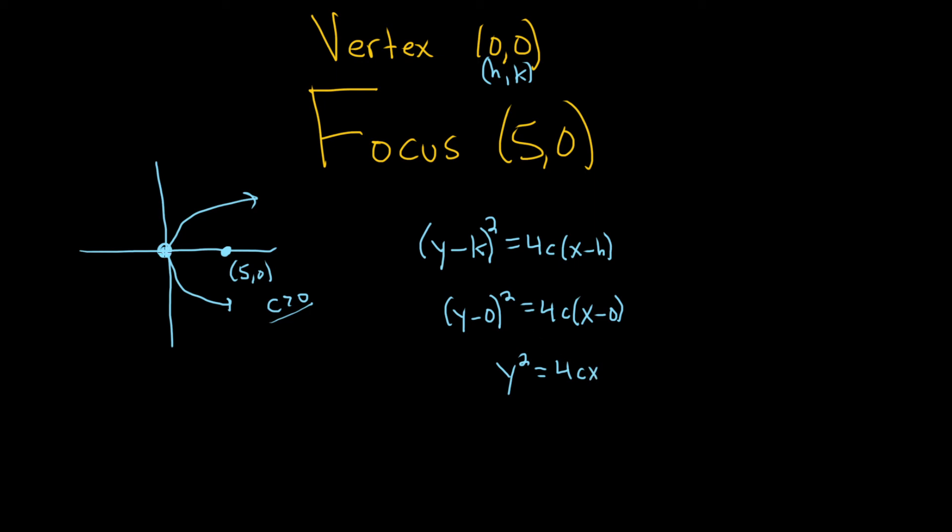The distance between the vertex and the focus is always equal to the absolute value of c. And so you see that this distance now is 5. So because c is positive, it's going to be positive 5. And again, the reason it's positive is because it opens right. If it was opening left, it would be a negative 5.